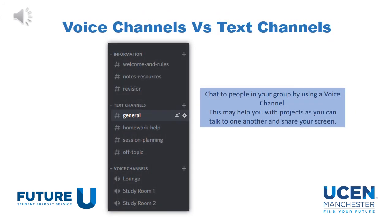Within your server, you have two different types of channels: a text channel and a voice channel. Text channels allow you to send messages to each other and type them out. Voice channels allow you to have group calls — for example, you may have a group call about a specific topic or project. The voice channels allow you to create groups for specific things and do voice calls with each other about them.